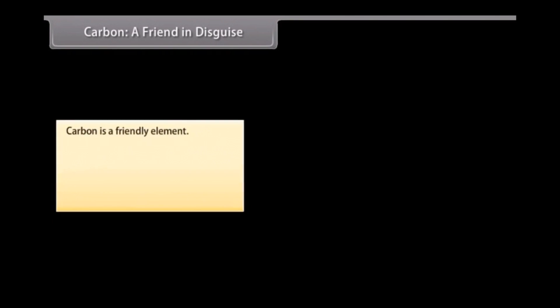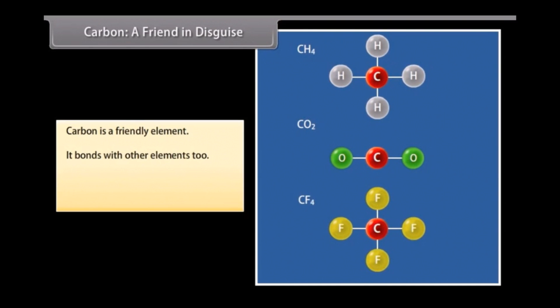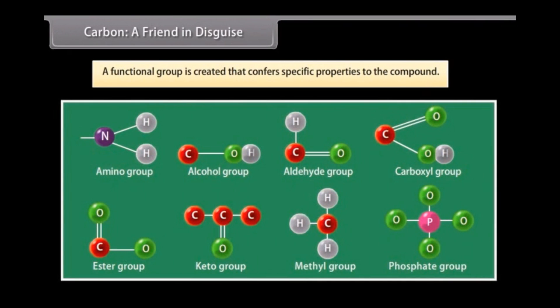Carbon, a friend in disguise. Carbon is a friendly element. It not only bonds with hydrogen but also with other elements such as halogens, oxygen, nitrogen, and sulfur. The compounds are formed in the same manner as with hydrogen. However, instead of hydrogen, the other element is used and this element replacing hydrogen is called a heteroatom. A functional group is created that confers specific properties to the compound without considering the length and nature of the carbon chain.